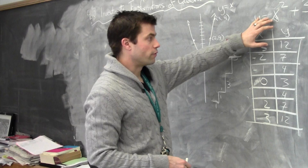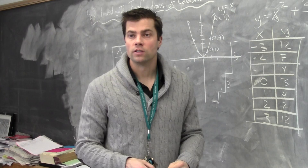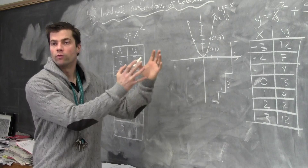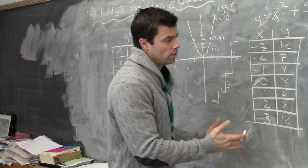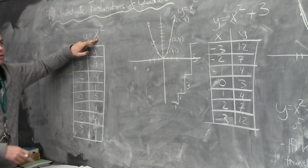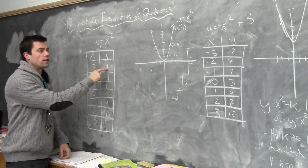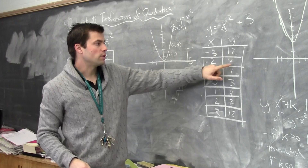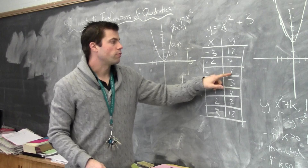The first example is what we call a vertical translation. 'Translate' basically means to move or shift — it's part of our math vocabulary. When we add a number to the end of the equation, if you're doing a table of values, adding 3 here means all we're doing is adding 3 more units to that y value. So if this is x squared, you're adding 3 more units: 9 becomes 12, 4 becomes 7, -1 becomes 4. The y value has just increased by 3.